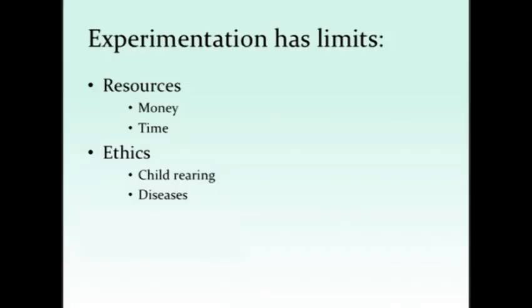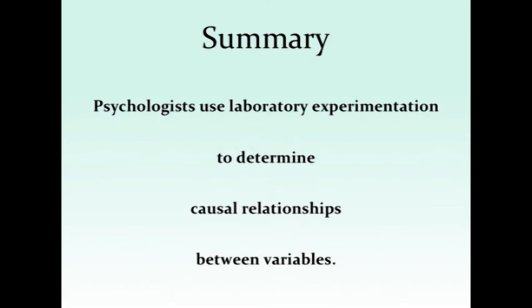The last limit of experimentation is that of validity. In the lab, we got undergraduate students to sit down and imagine talking to a Muslim and then lay out a set of chairs — but in real life, that never happens. So in what way can we say this actually translates to real-life behaviour? We can get around that by designing better experiments that take into account more real-life variables, but then we get back into the time and the money. So in summary, psychologists use laboratory experimentation, and this is how it works and how it helps us understand what's going on.